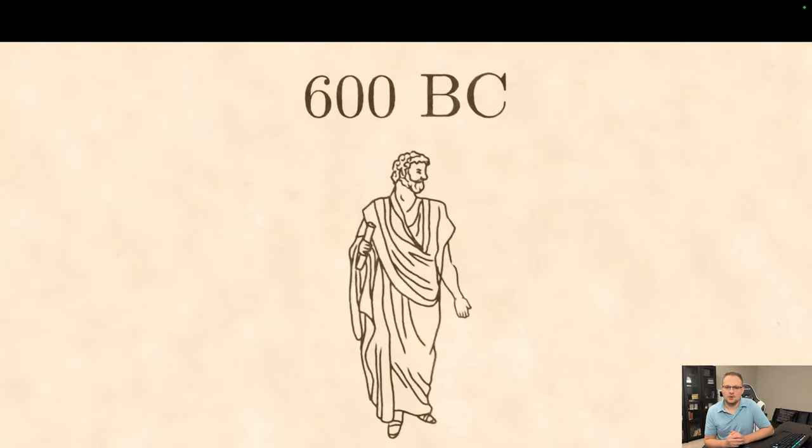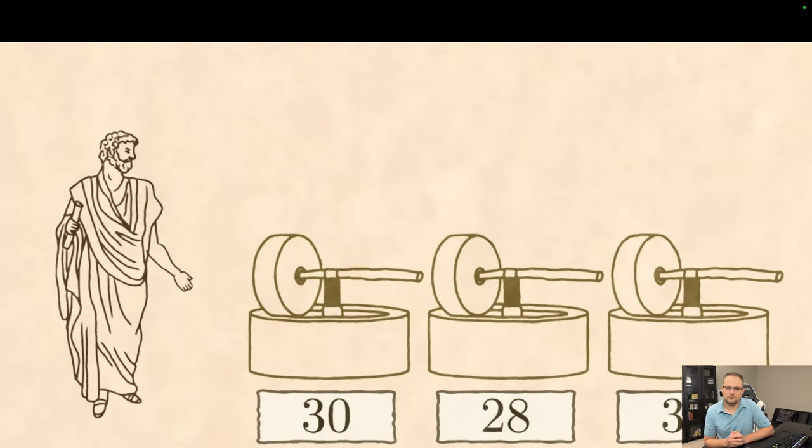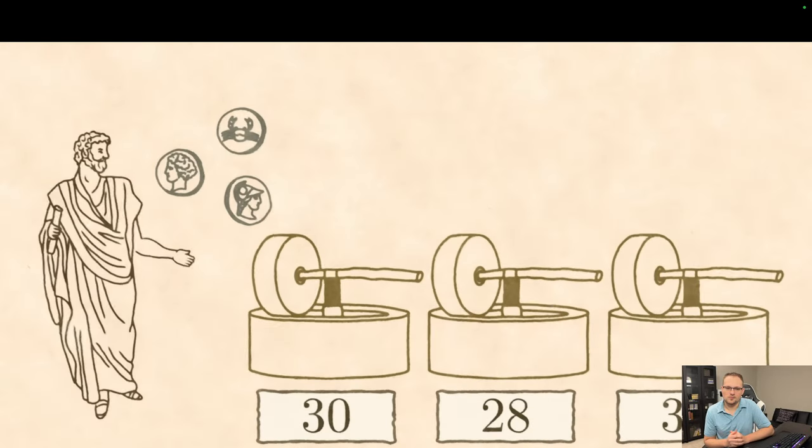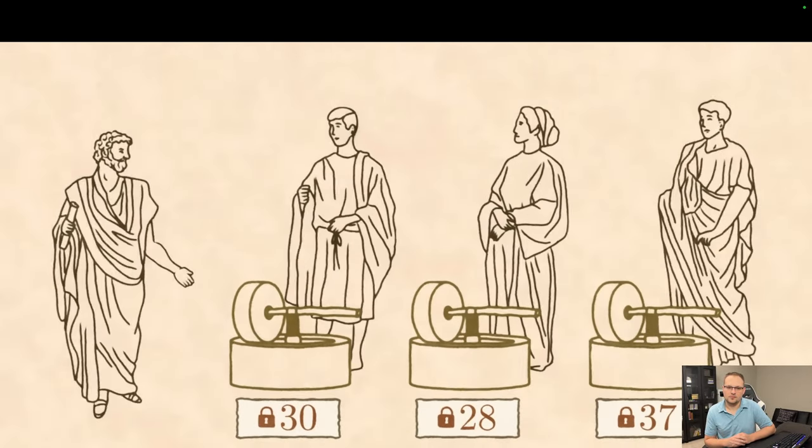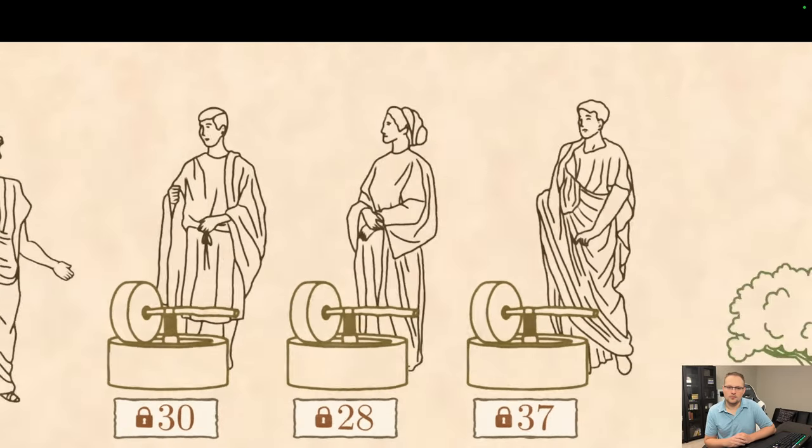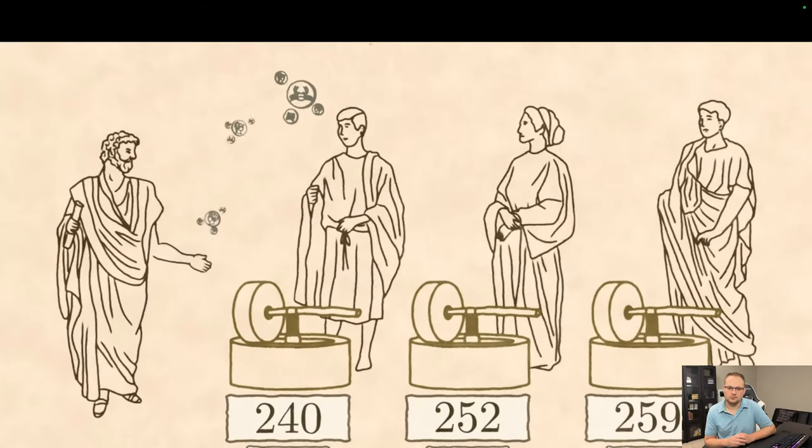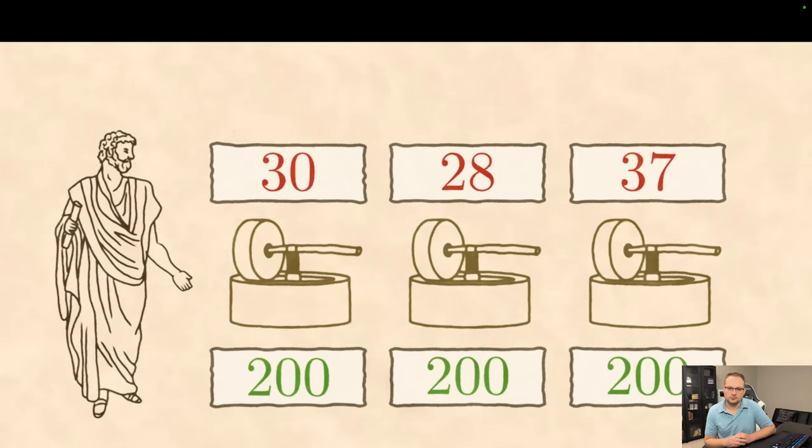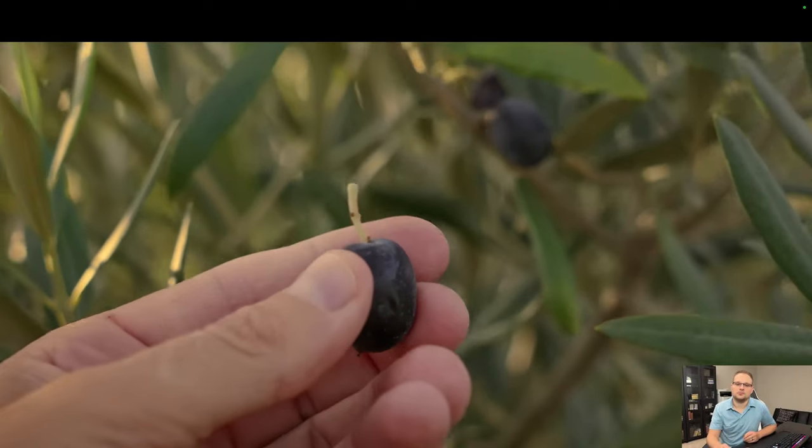The earliest known options were bought around 600 BC by the Greek philosopher Thales of Miletus. He believed that the coming summer would yield a bumper crop of olives. To make money off this idea, he could have purchased olive presses, which if he were right, would be in great demand. But he didn't have enough money to buy the machines. So instead, he went to all the existing olive press owners and paid them a little bit of money to secure the option to rent their presses in the summer for a specified price. When the harvest came, Thales was right. There were so many olives that the price of renting a press skyrocketed. Thales paid the press owners their pre-agreed price, and then he rented out the machines at a higher rate and pocketed the difference. Thales had executed the first known call option.